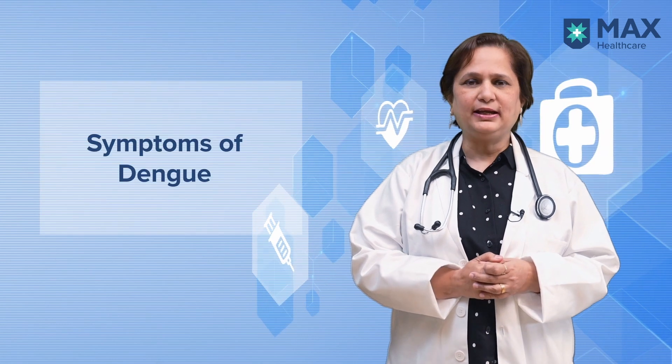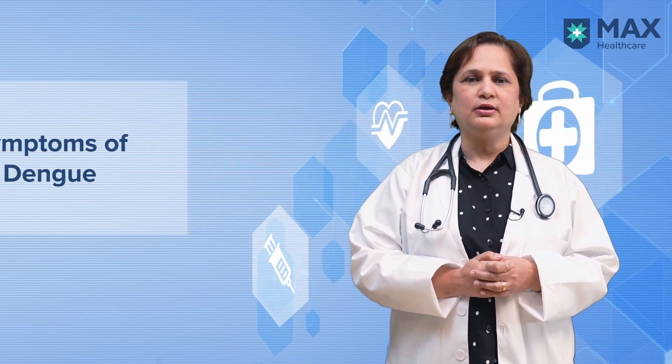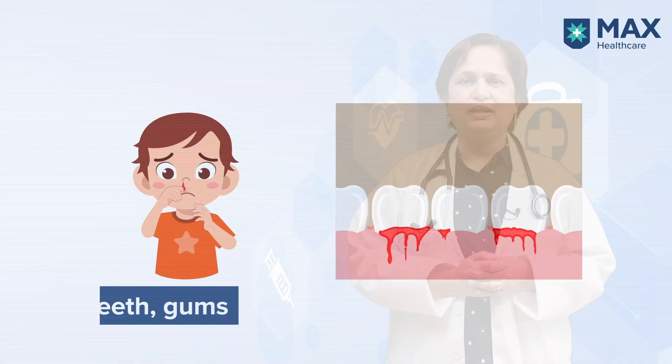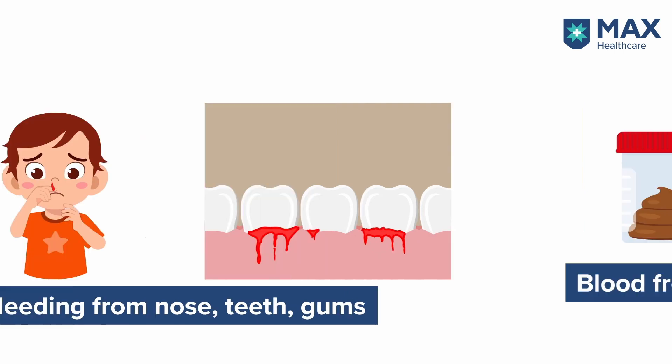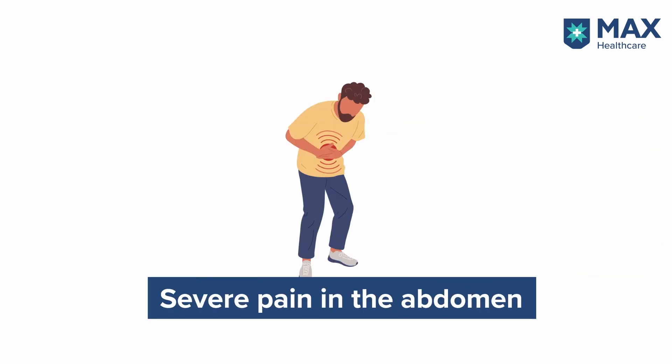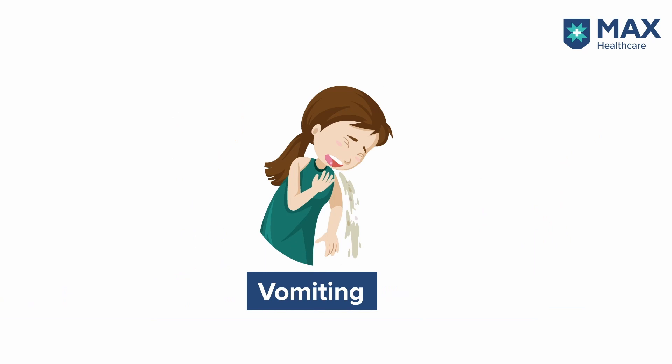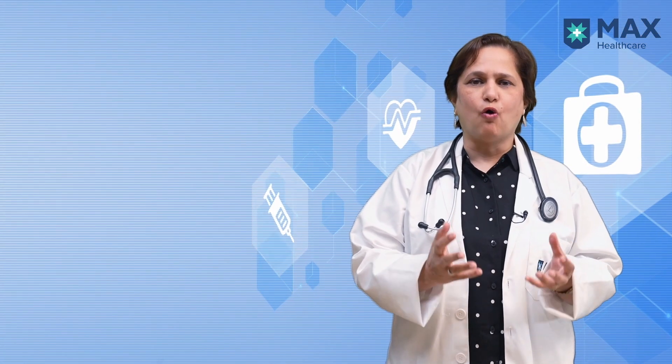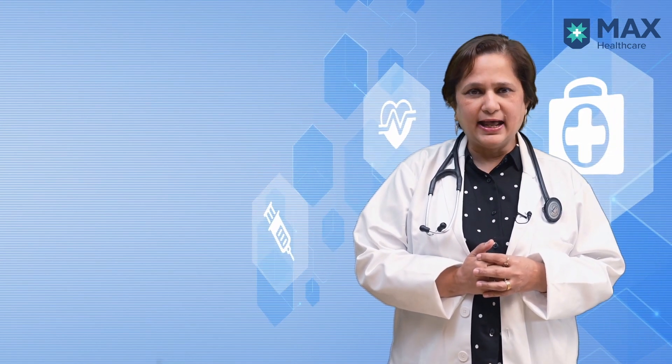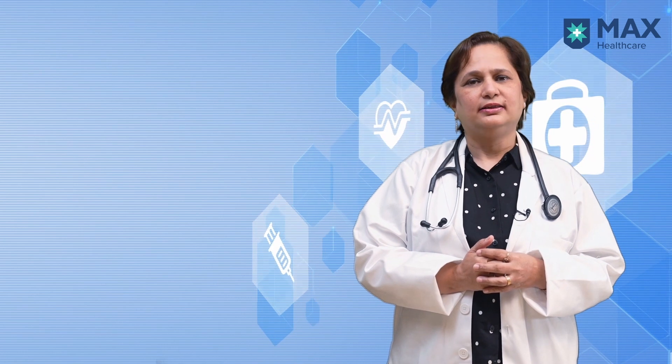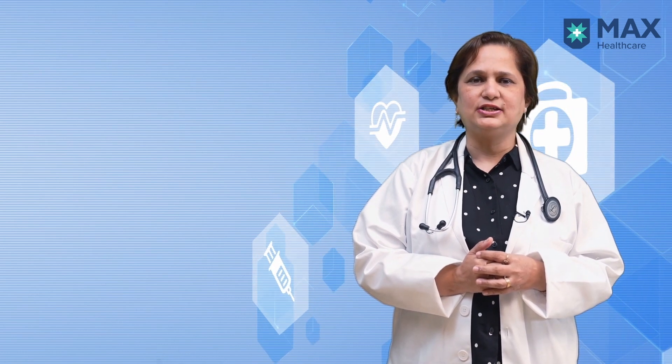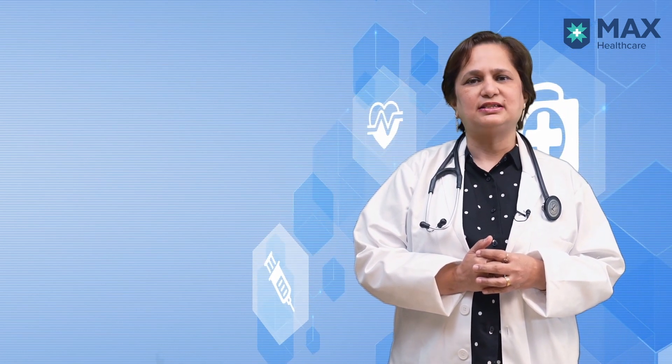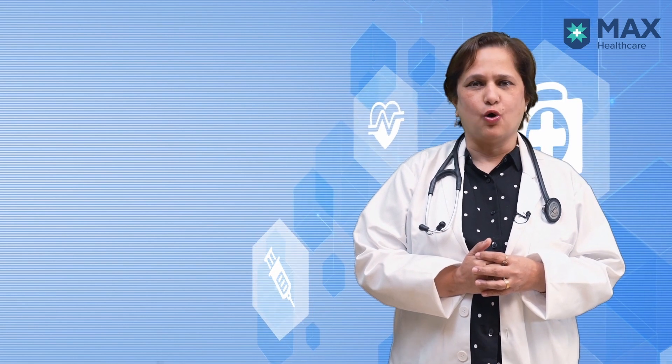The complications of Dengue can include bleeding, which means bleeding from the nose, teeth, gums, blood in the urine or stool, severe pain in the abdomen, vomiting, drowsiness, and unconsciousness. These are some of the warning symptoms which means that if a Dengue patient has these symptoms or is unable to take anything orally, then he would require hospitalization. The rest of the people can stay at home and be treated at home.